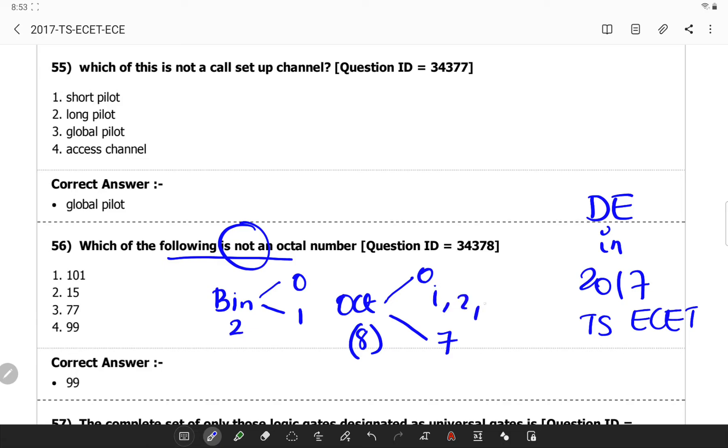So it will be having values which are less than 8. If you observe, these three have values which are less than 8 or between 0 to 7. However, 99 is greater than octal number 8, so this is not an octal number.